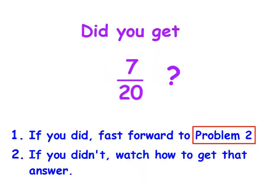Did you get 7 twentieths? If you did, fast forward to problem number 2. If you didn't, watch how to get that answer.